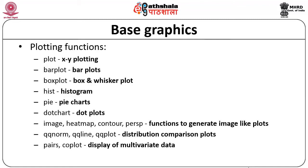Heatmaps are useful for understanding the distribution of data in a specific coordinate environment. For example, when working with fuzzy variables, heatmaps or contours may be very effective for visualization. We also have functions for distribution and comparison plots like qnorm, qline, and qplot, and support for displaying multivariate data using the pairs function and coplot function. These are the fundamental plot functions for displaying univariate as well as bivariate variable data relationships.